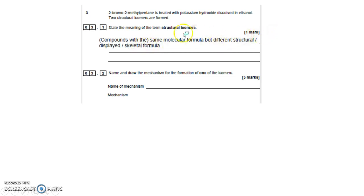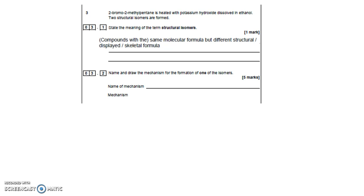There are three kinds of structural isomers. There's something called a chain isomer, something called a position isomer, and something called a functional group isomer. The chain isomer is where you shorten the chain and introduce a branch. For example, C4H10 can be drawn as butane, or you could shorten the chain and introduce a branch to give 2-methylpropane — a chain isomer.